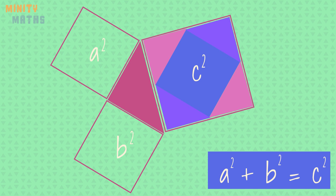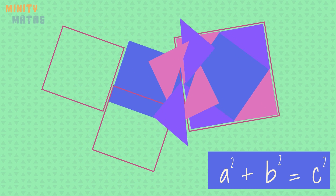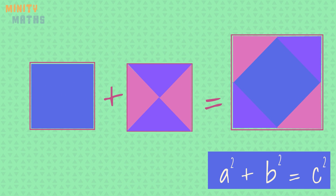Here we can see that the squares of both a and b fit perfectly inside the square of c. Therefore, a squared plus b squared is equal to c squared.